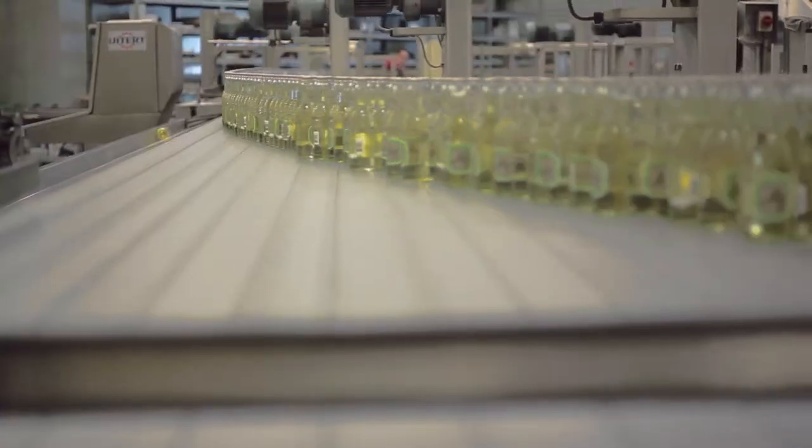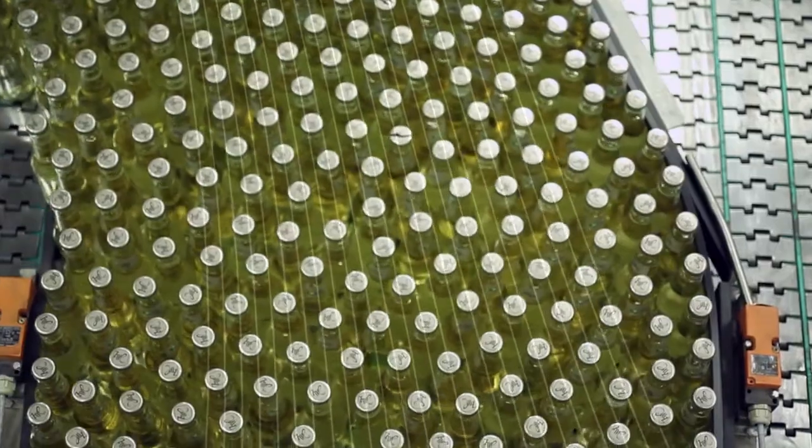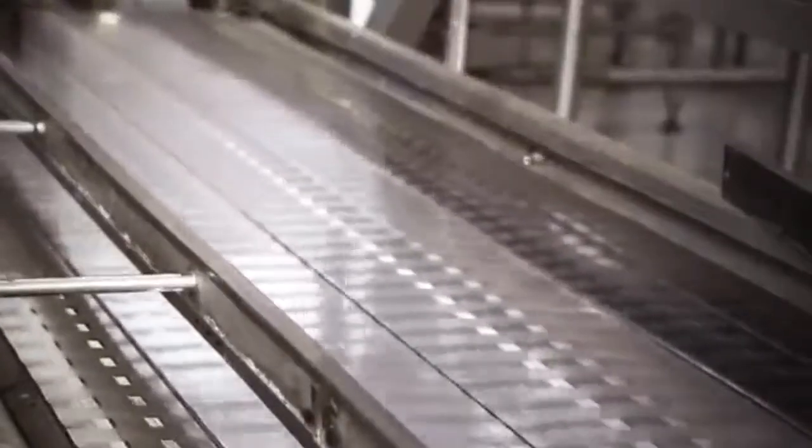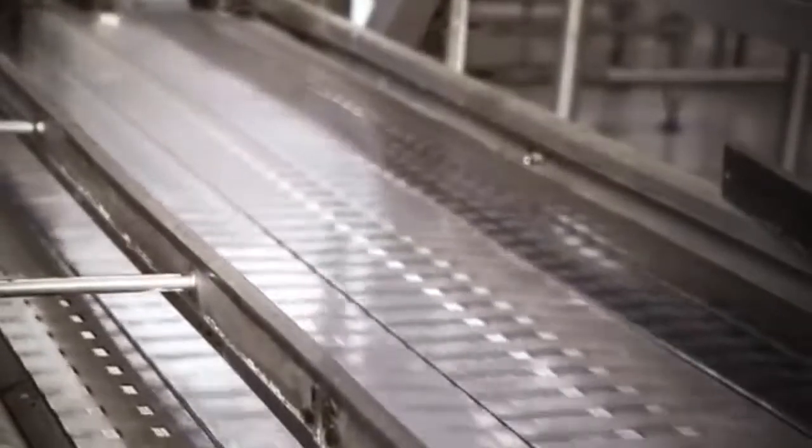If the chain series number is illegible or unreachable due to running production, we can identify the chain by measuring the pitch, chain height, and width of the chain.